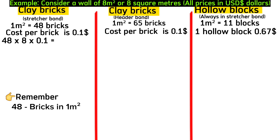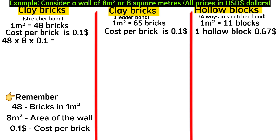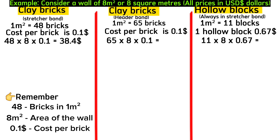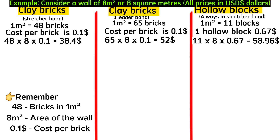For bricks in stretcher bond: 48 bricks per sqm × 8 sqm × $0.10 = $38.40. For bricks in header bond: 65 × 8 × $0.10 = $52.00. For hollow blocks: 11 blocks per sqm × 8 sqm × $0.67 = $58.96. The purchase cost is highest for hollow blocks, but mortar joints have not yet been considered.